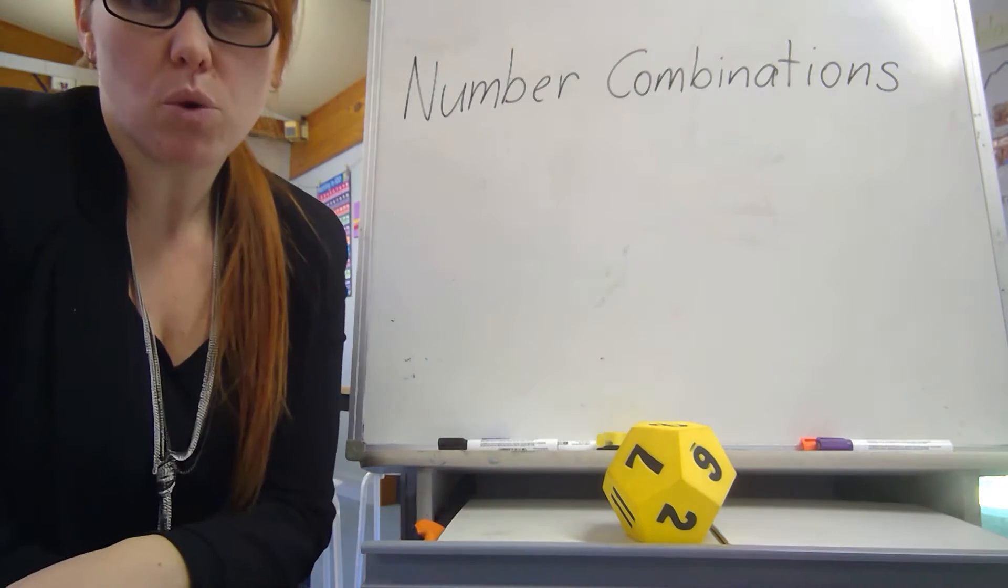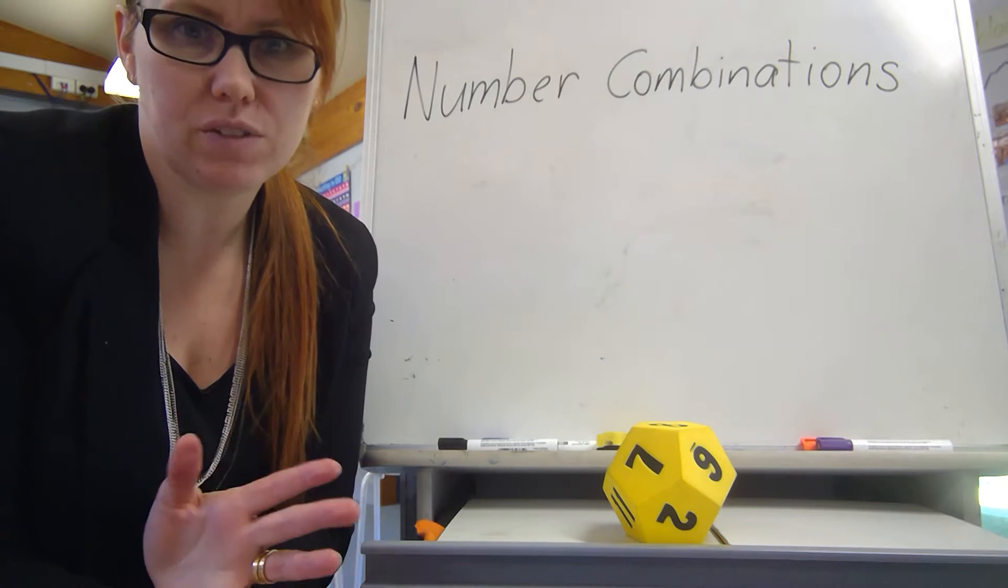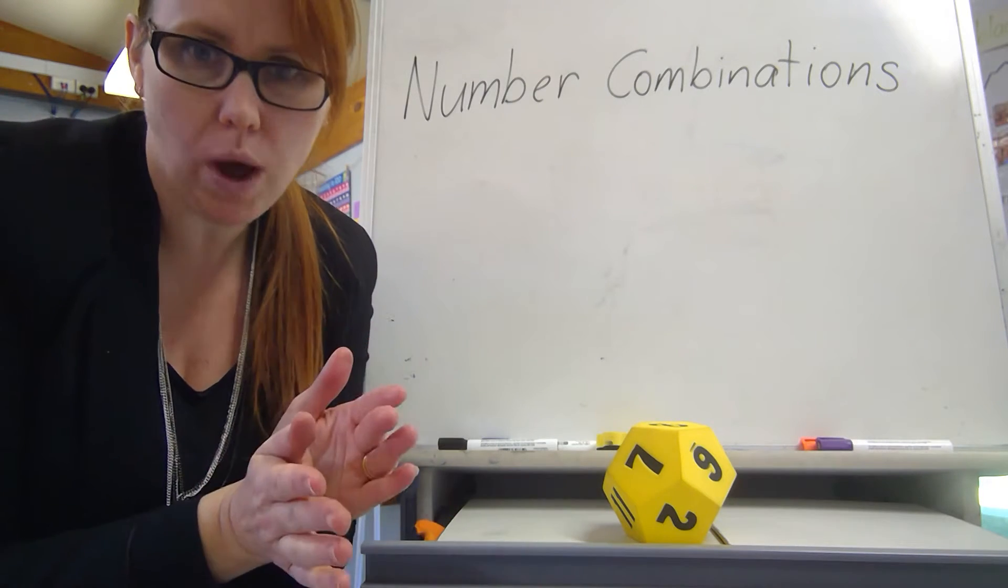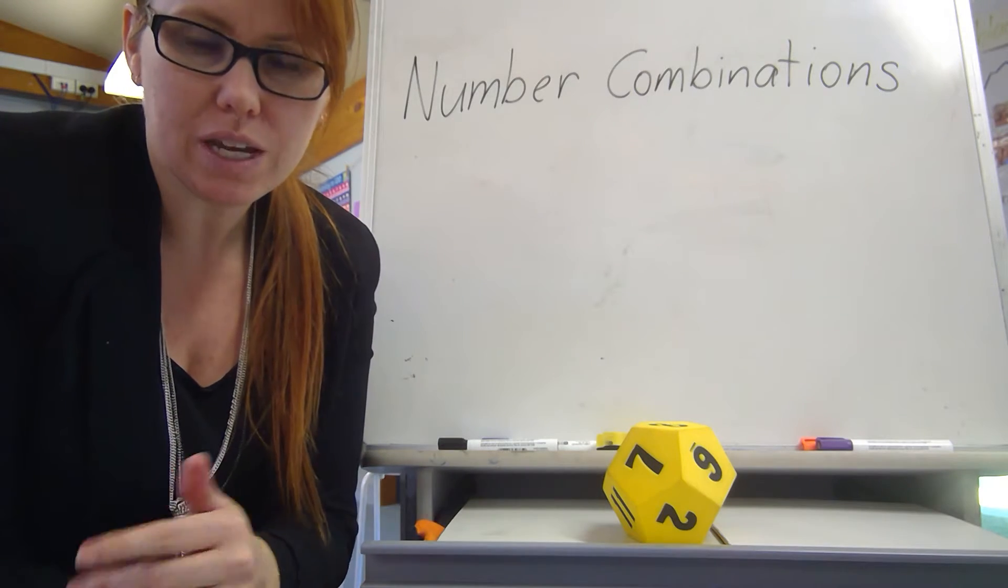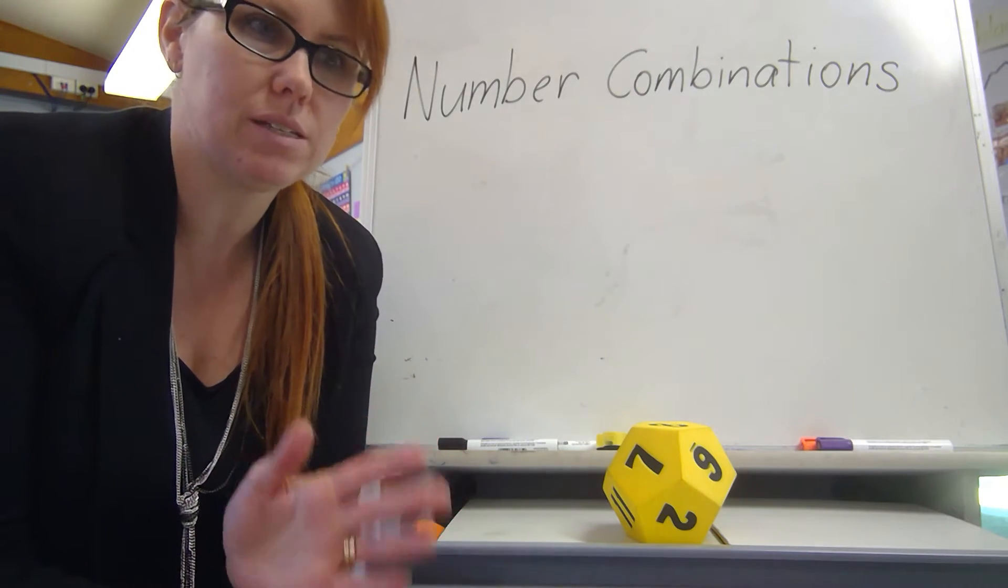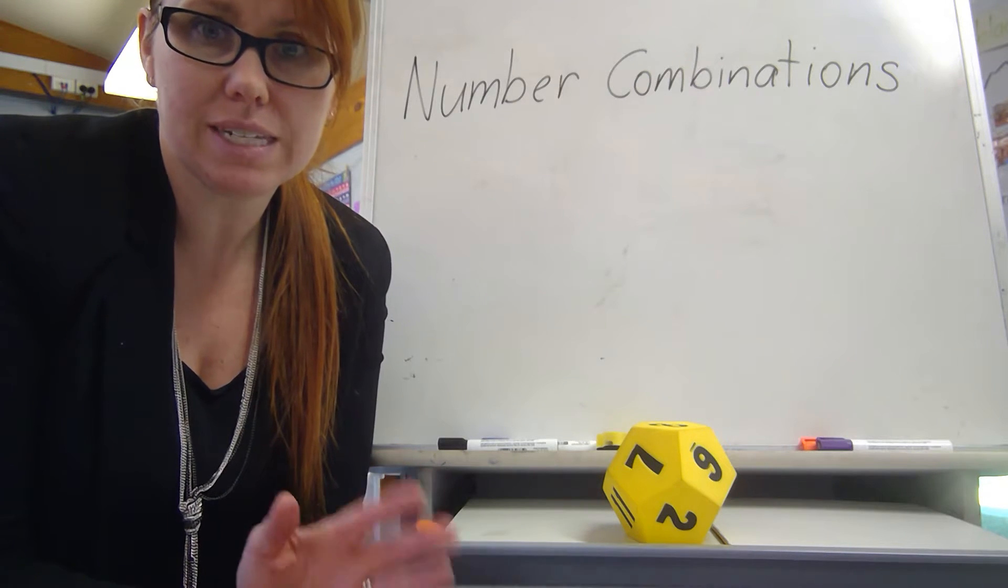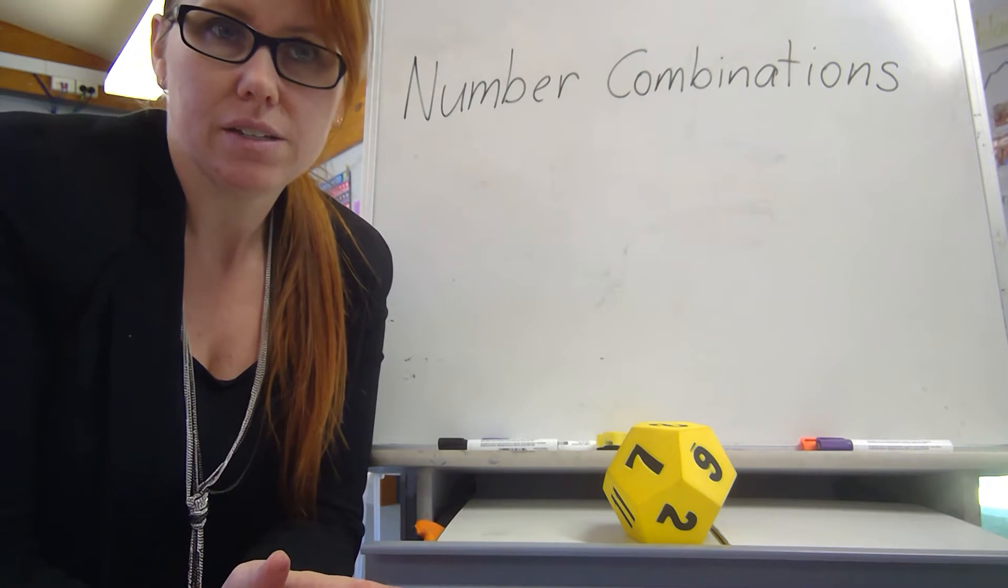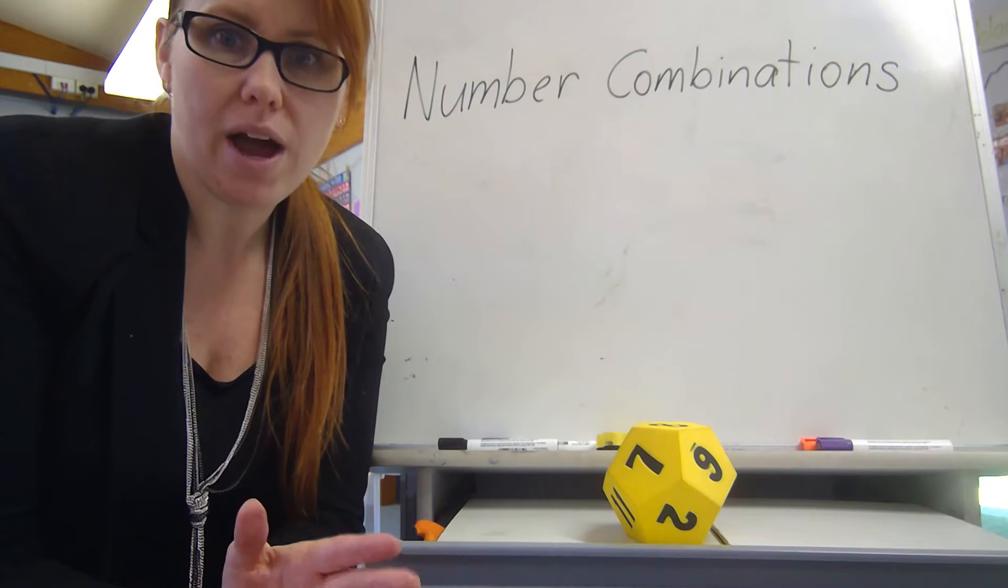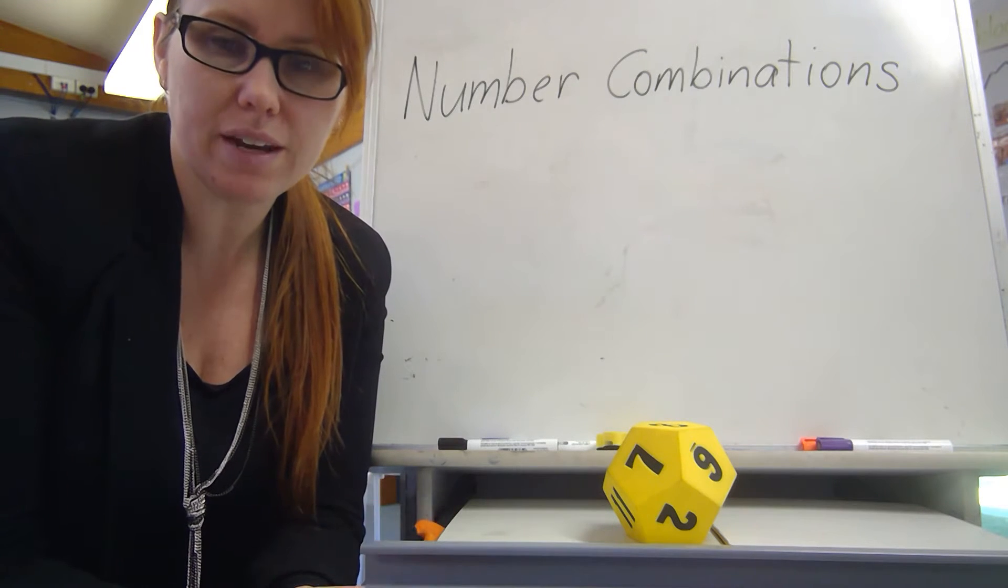We've done this before when we've done friends of 10 and friends of 20. We know that 9 and 1 are friends of 10, which means 9 plus 1 is 10. We've also done 8 and 2 are friends of 10, which means that 8 plus 2 is 10. There are lots of different number combinations to get to 10 and those have all been our friends of 10. We did the same for 20. So 19 and 1 are friends of 20. That means that 19 plus 1 is 20.